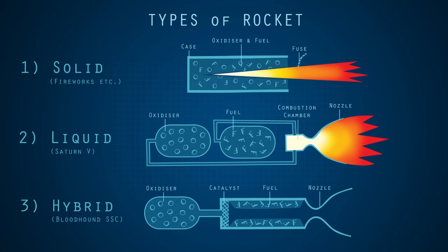In Bloodhound, the oxidizer is high test peroxide, or HTP. It is pumped through a silver-plated catalyst which causes it to decompose, releasing very hot steam and oxygen. This is hot enough to ignite the fuel itself and create thrust.